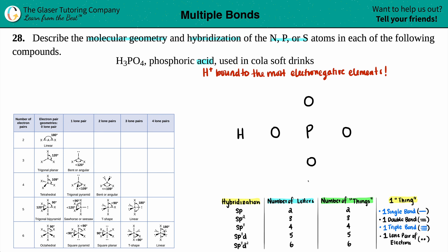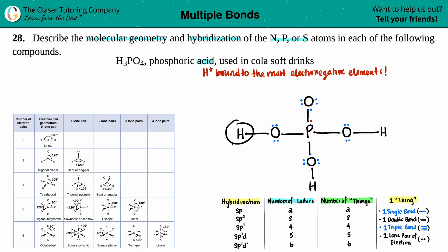Now we place the valence electrons. Each hydrogen has one valence electron. Each oxygen in group 16 has six valence electrons, so we draw six dots around each oxygen. Phosphorus, which is below nitrogen, has five valence electrons. Then we make single bonds dot-to-dot for every connection, and check the outer elements to see if they satisfy the octet rule. Hydrogen only wants two electrons, so all hydrogens are fine.